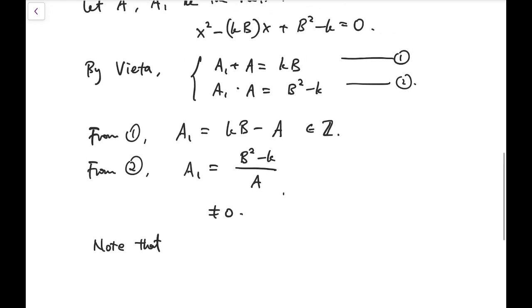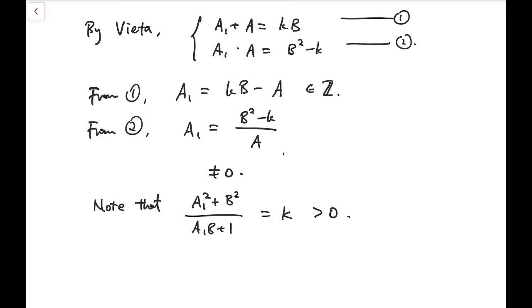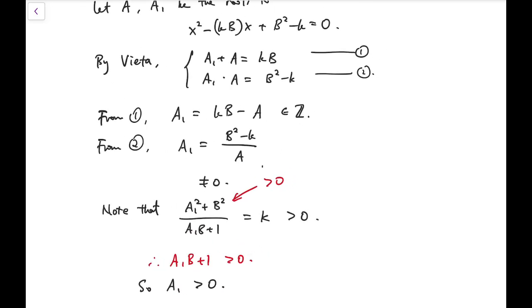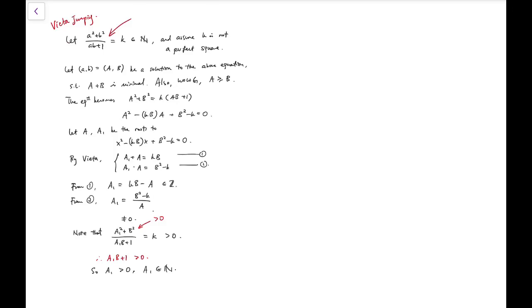Noting that the fact that big A1 is a root tells us that A1 squared plus B squared over A1B plus 1 equals k, and this k is positive. Together with the fact that A1 squared plus B squared is also positive, this part, A1B plus 1, should also be positive. And from this, we can already tell that big A1 is positive. So because it's positive and an integer, therefore, A1 is a natural number, which means it's a valid solution to the starting expression.